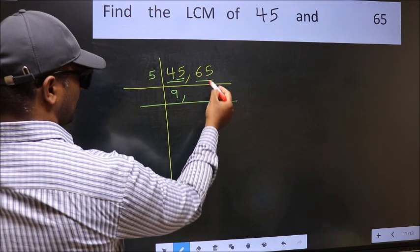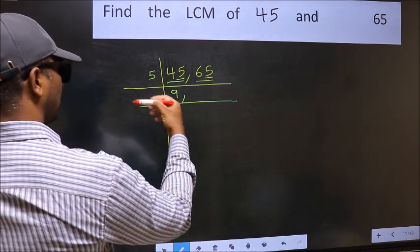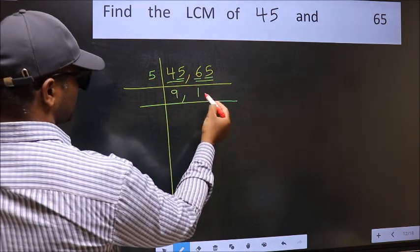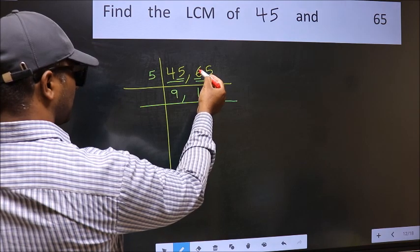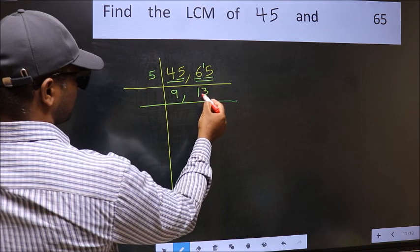The other number 65, last digit 5, so this number is divisible by 5. First number 6, a number close to 6 in 5 table is 5 once 5. 6 minus 5, 1, 1 carried forward 15. When do we get 15 in 5 table? 5, 3 is 15.